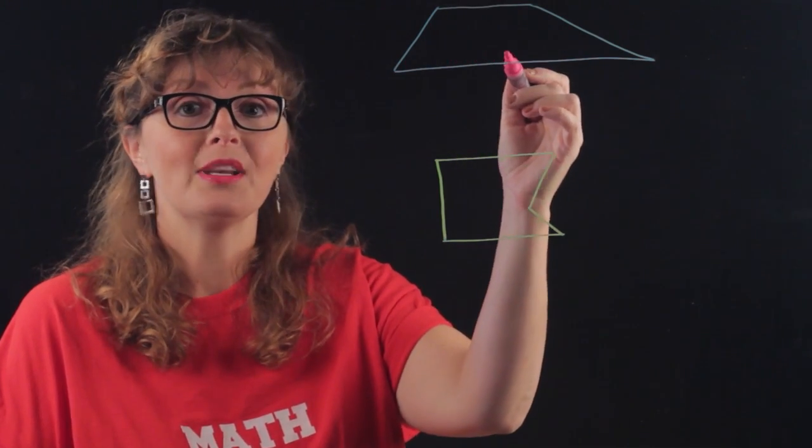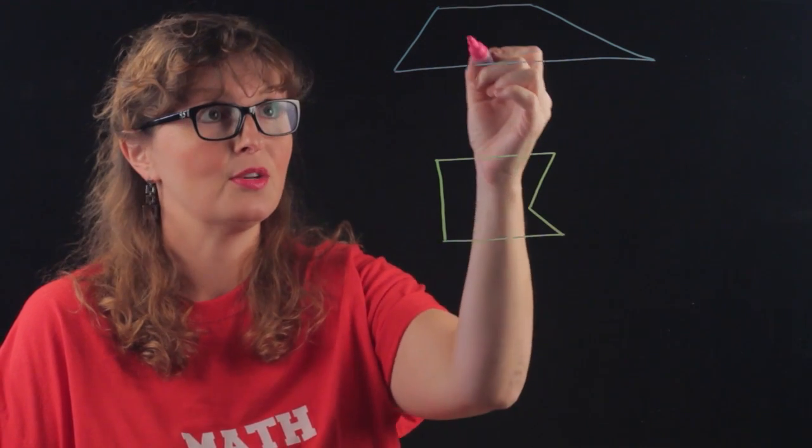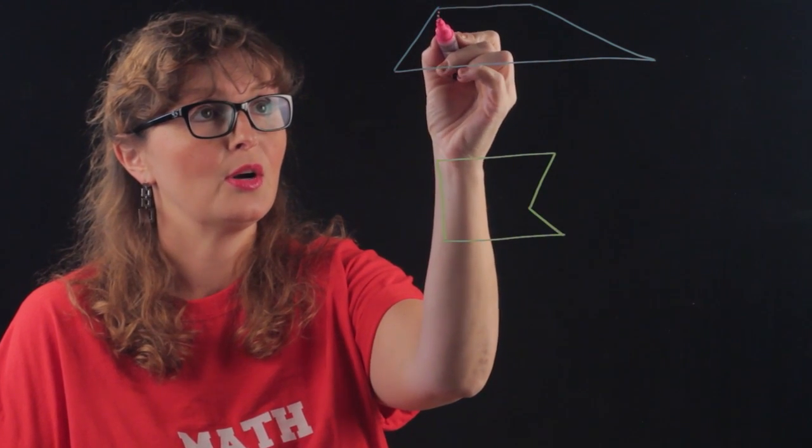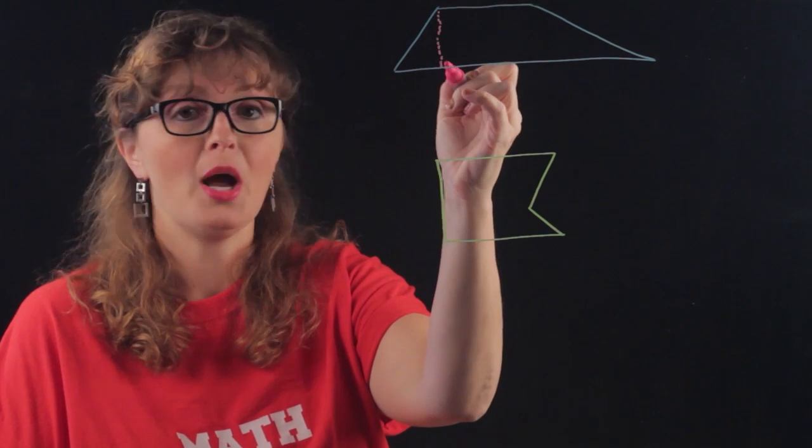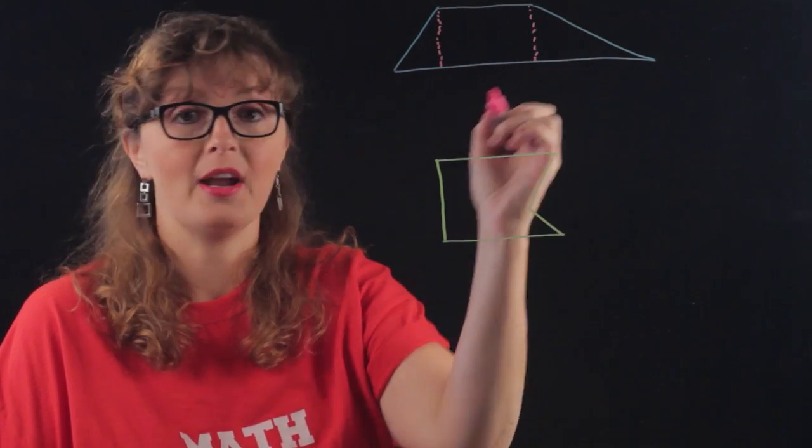Here you can remember the area for the trapezoid, but if you don't remember that and you don't have Google on hand, you can go, okay, well, if I chop off that triangle and chop off that triangle, then I have a triangle, a rectangle, and a triangle.